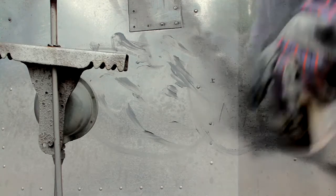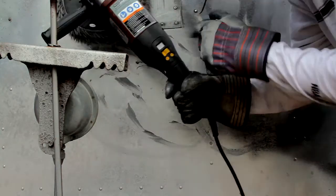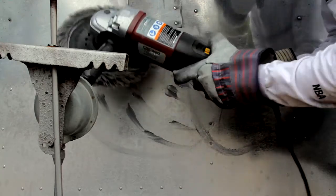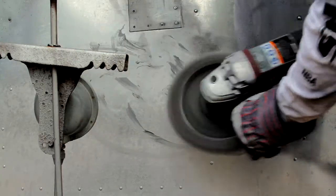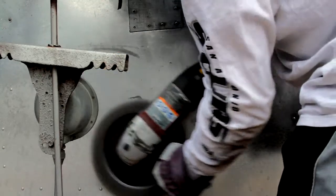I'm using a polisher from Harbor Freight, the Chicago model, the cheapest one they got. I'm going to start off on speed 10 which is pretty slow, just to spread the Nuvite stuff all over the surface that I'm working with.